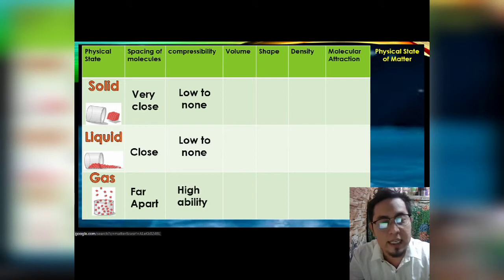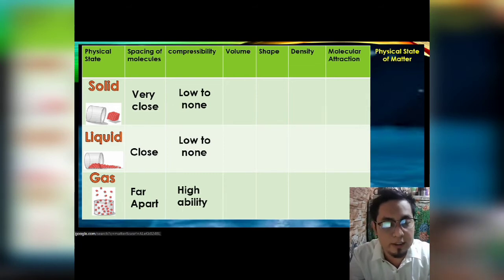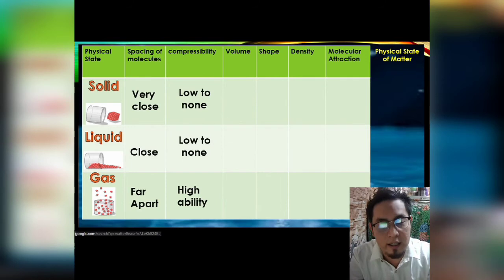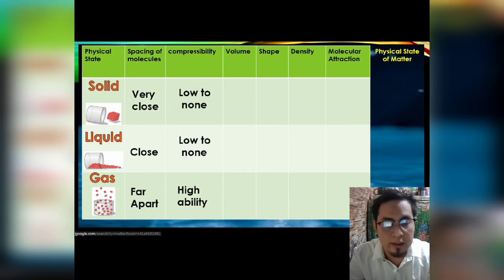Gas has a high ability to be compressed. The best example of gas that can be compressed is oxygen from the oxygen tank of a hospital.